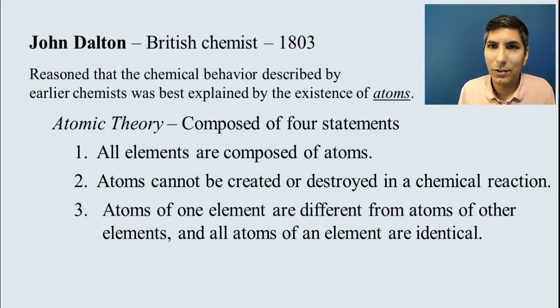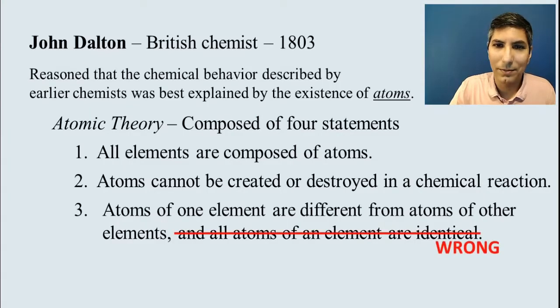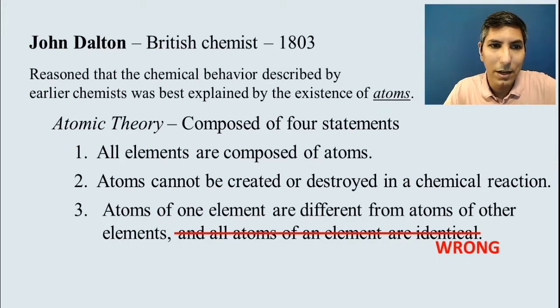Now, if you watched the last video in Unit 1, Section 2, we know that the second part of that is wrong. We know that there are these things called isotopes. You can have different varieties of an element, like we saw the three isotopes of hydrogen. They're not identical. So that part of his atomic theory was wrong. But the first part of it is certainly correct. Atoms of hydrogen are going to be completely different from atoms of oxygen.